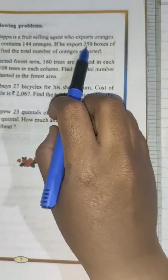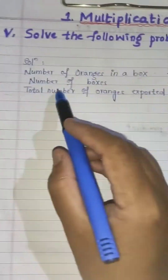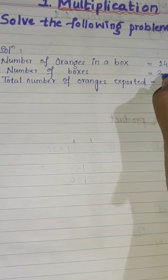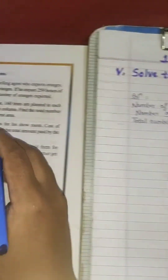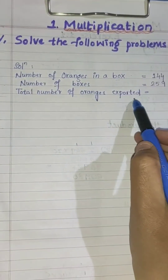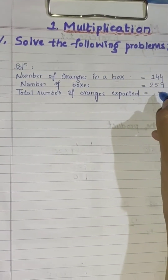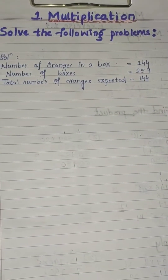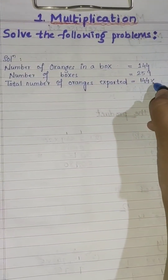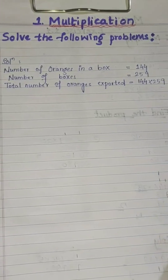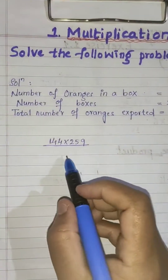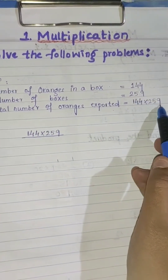If he exports 259 boxes of oranges, the number of boxes is 259. Then find the total number of oranges exported — we have to calculate it. So we write 144 and we have to do the multiplication: 144 into 259. Let's do it.